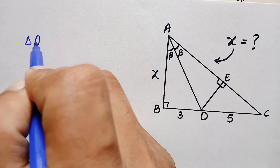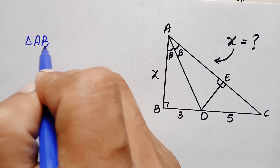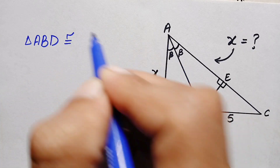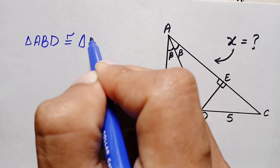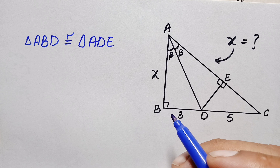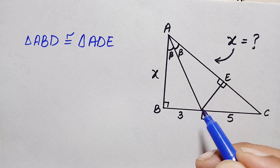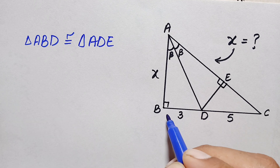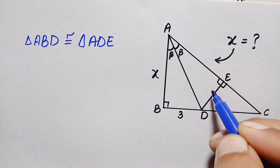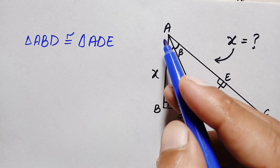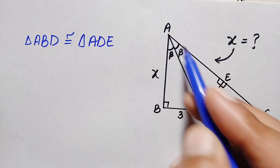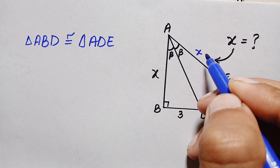Triangle ABD is congruent to triangle ADE. Since these two triangles are congruent, the lengths of their corresponding sides are also equal. BD is 3 units, so DE will also be 3 units. The perpendicular height AB is x, so AE will also be x.